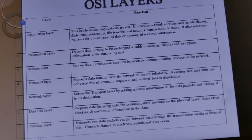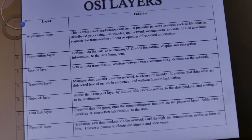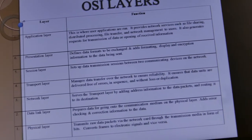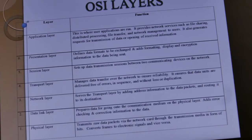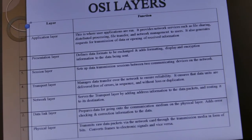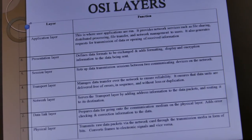The Data Link layer prepares data for going onto the communication medium on the physical layer and adds error checks and correction information to the data. The Physical layer transmits raw data packets via the network card through the communication media in the network.